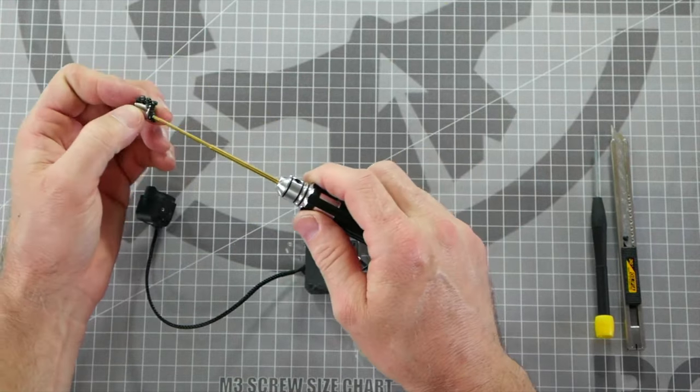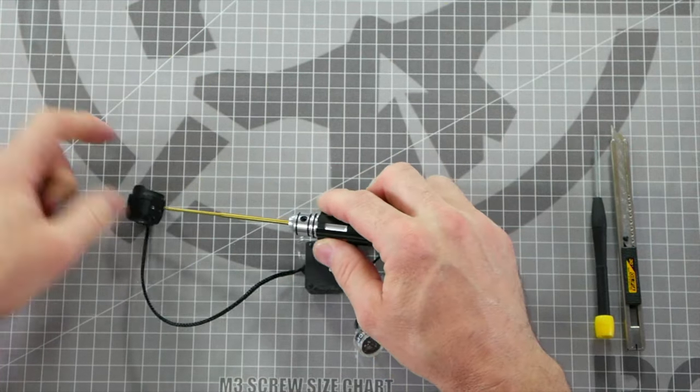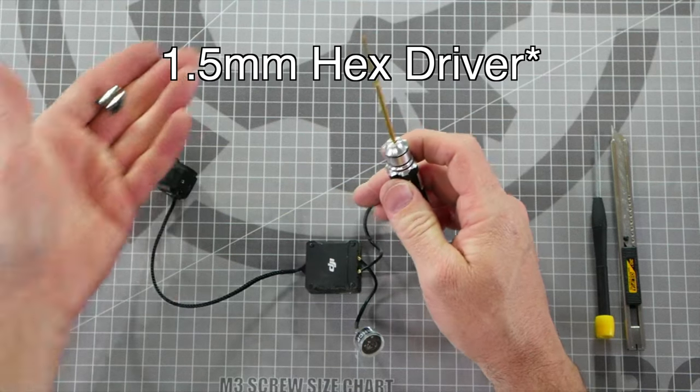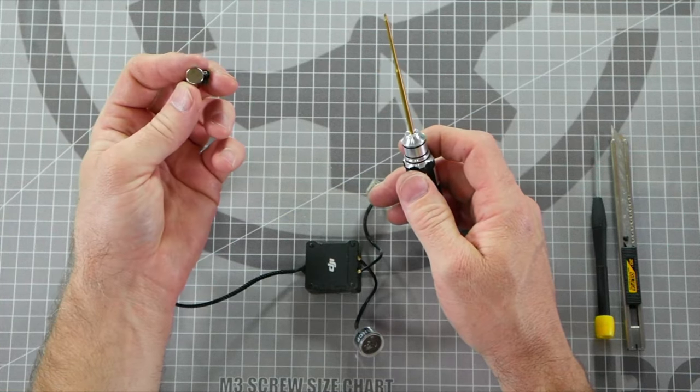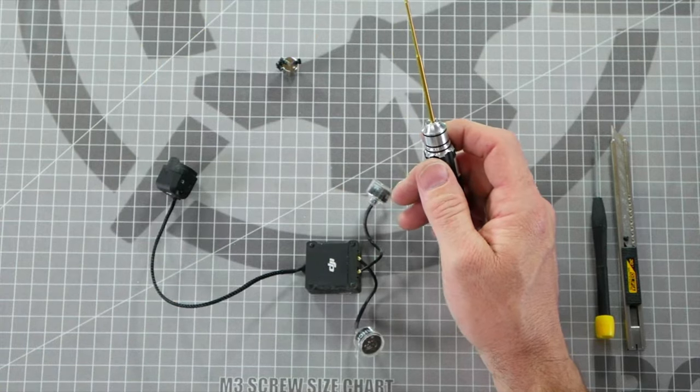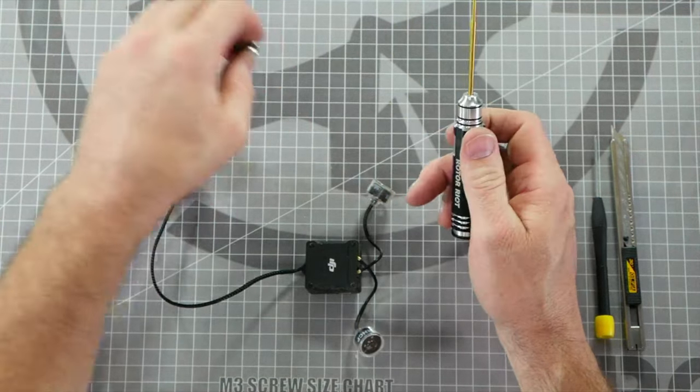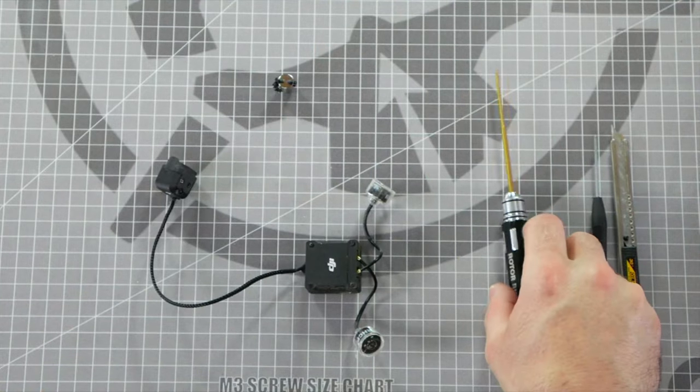The first step is to remove the M2 screws from the side of the FPV camera using your two millimeter hex driver. I've already removed them and I like to use a magnet to hold all my screws. The magnet's also really good for magnetizing your tools during the build process.